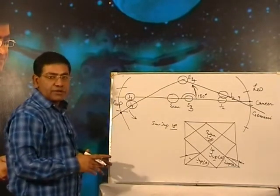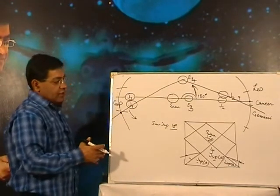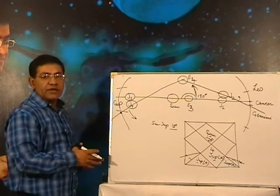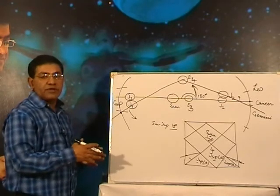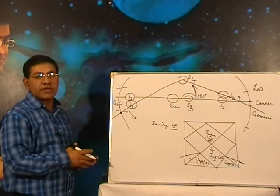Now I will explain the retrogression and combustion of the inferior or the interior planets Mercury and Venus.